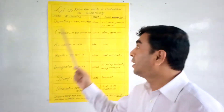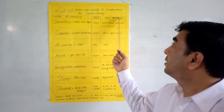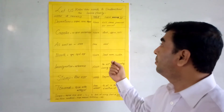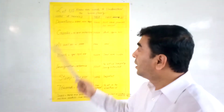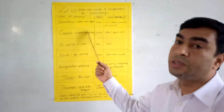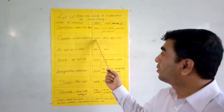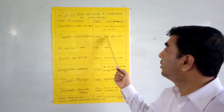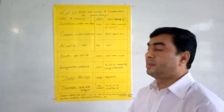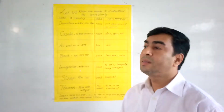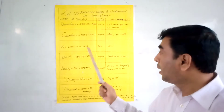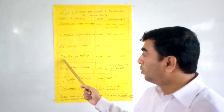Departure is a noun. The next words are also nouns. As well as — meaning 'also' or 'and both' — is a phrase used in English. Booth means a very small room or counter — it is a noun.